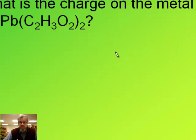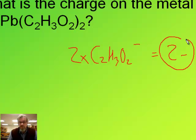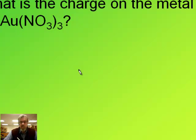What's the charge on the lead in lead acetate? Acetate, C2H3O2, is a one minus ion. We have two of them, so that gives us a total negative charge of two minus. The lead must then balance that, so we have lead two plus because there's only one atom of lead.